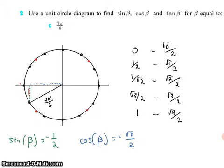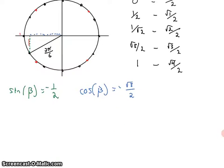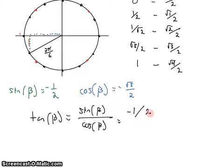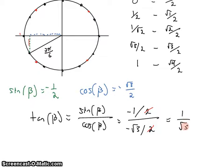That gives us sine, and that gives us cosine. For tangent, you could use tangent's unit circle, or you could just remember that the tangent of the angle is the sine of the angle over the cosine of the angle. That'll be negative 1/2 divided by negative √3/2. The 2s cancel, and we get 1/√3.